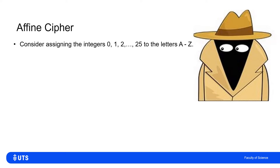Consider a word written using only the 26 characters of the Latin alphabet, A to Z. Any word written in the English language uses these 26 characters, and we assign each letter A to Z uniquely an integer 0 to 25. That's 26 integers assigned to the 26 letters.